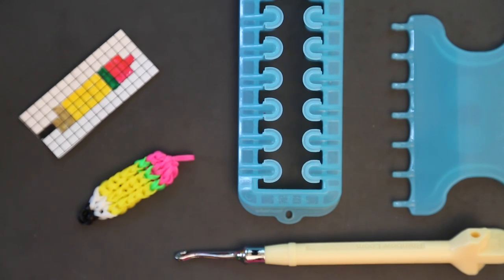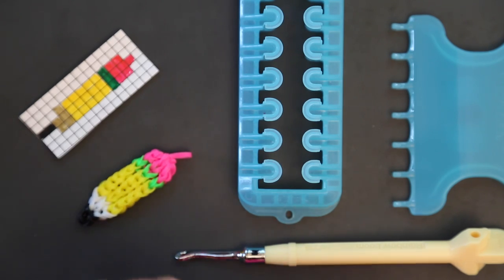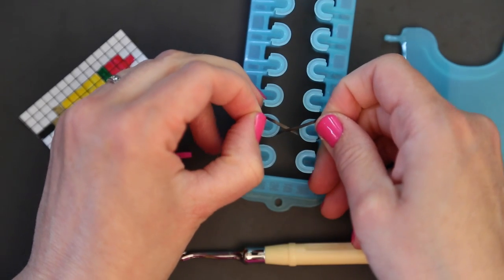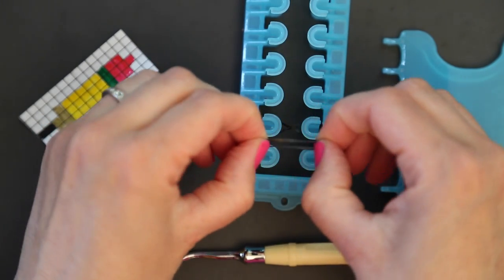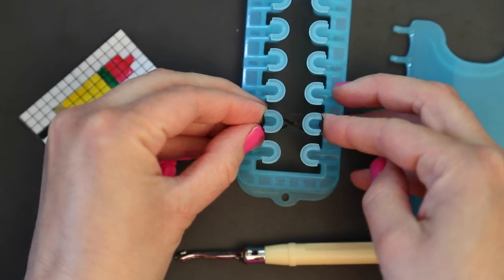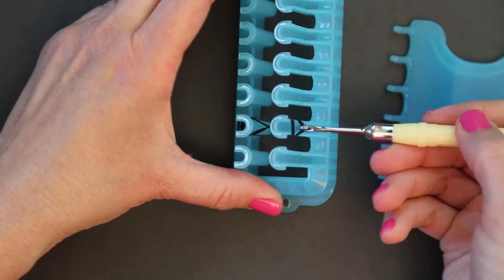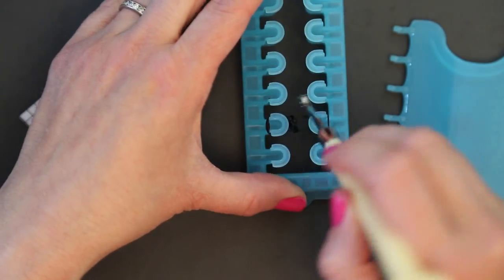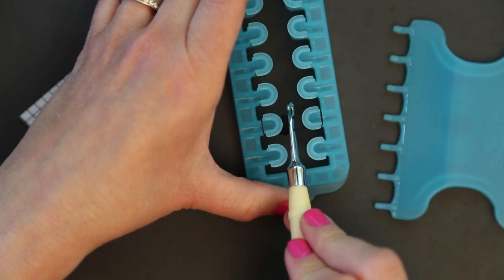The first rubber band you need is the color of the tip of your pencil, and you're going to take that and twist it and place it over the second peg. Then a second band in the color you want the tip of your pencil to be, straight across the same two pegs. Then bring that bottom band up from the bottom to the top on both sides, and push down.